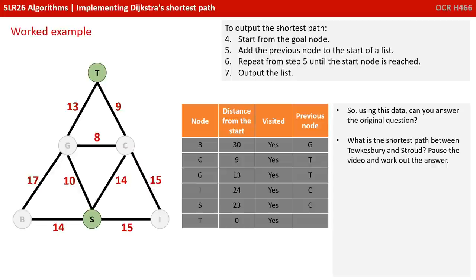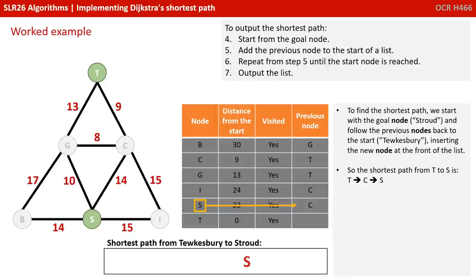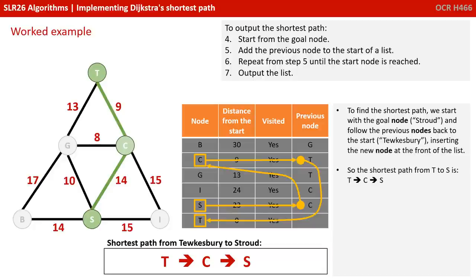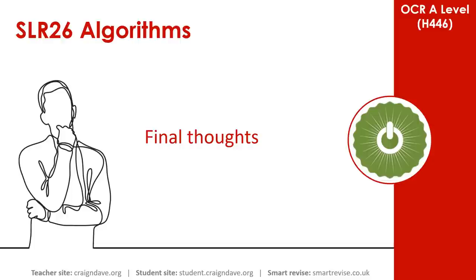To find the shortest path, we start with the goal node Stroud and follow the previous nodes back to the start, Tewkesbury, inserting each new node at the front of the list. The shortest route from Tewkesbury to Stroud is Tewkesbury, Cheltenham, Stroud.